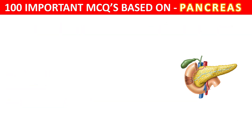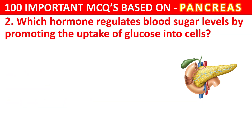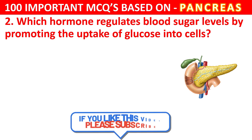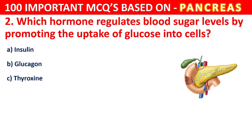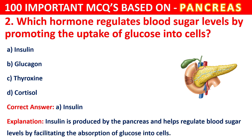Question 2. Which hormone regulates blood sugar levels by promoting the uptake of glucose into cells? Your options are Insulin, Glucagon, Thyroxin, or Cortisol. The correct answer is A, that is Insulin. Insulin is produced by the pancreas and helps regulate blood sugar levels by facilitating the absorption of glucose into the cells.